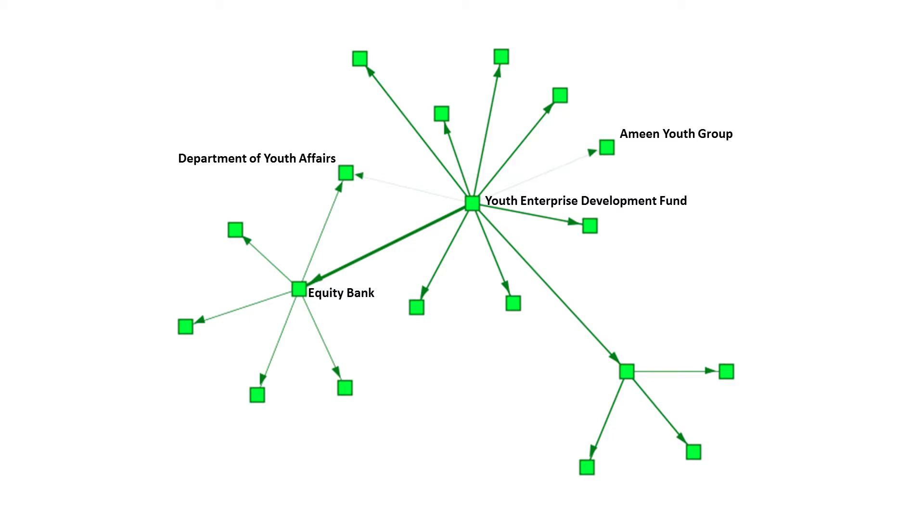As you can see by these OUT degree links, Youth Enterprise Development Fund listed Department of Youth Affairs, Equity Bank and Amin Youth Group as organizations they go to. That's why arrows are pointing OUT from Youth Enterprise Fund. I will use the information participants provide about frequency to determine the strength of the relationship. You can see that Youth Enterprise Development Fund interacts with Equity Bank most frequently and with Department of Youth Affairs and Amin Youth Group least frequently.